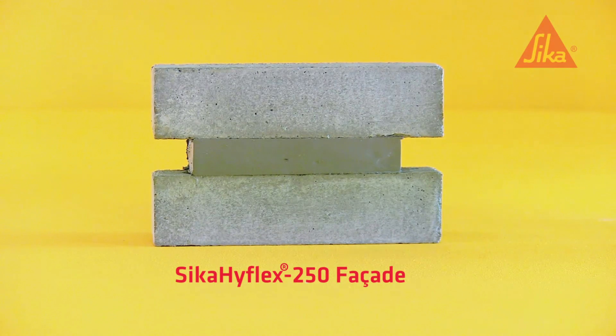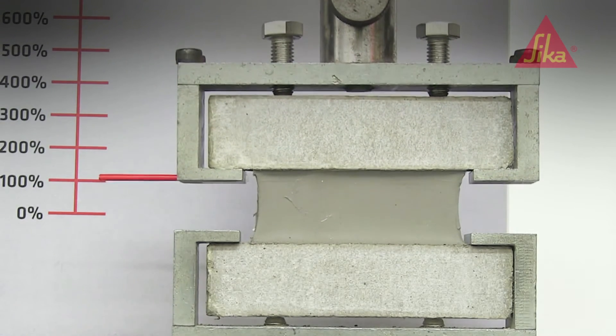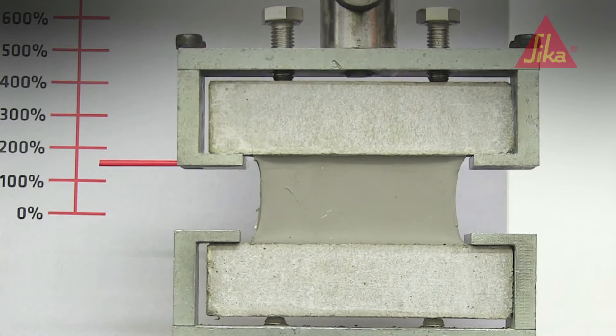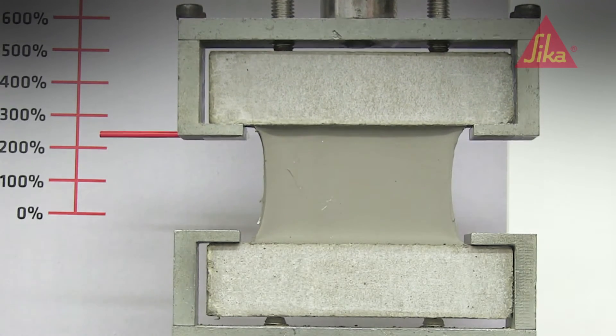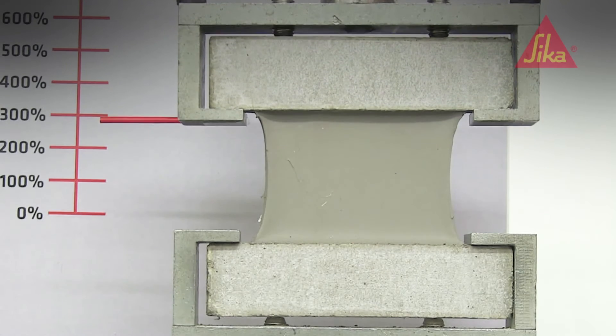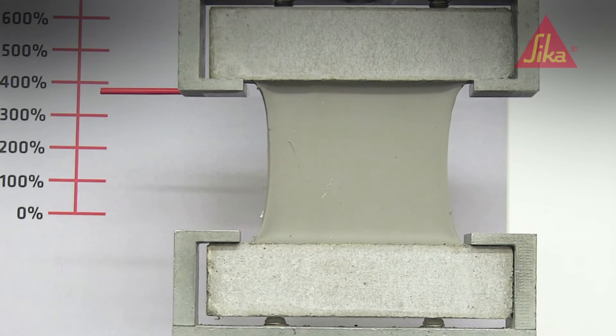Then it was the turn of Sika HyFlex 250 façade. Sika's datasheets state it will easily perform to a specified plus 100% expansion and a minus 50% contraction. But what if there was a seismic event outside those parameters? And the Christchurch earthquakes were well outside those parameters.